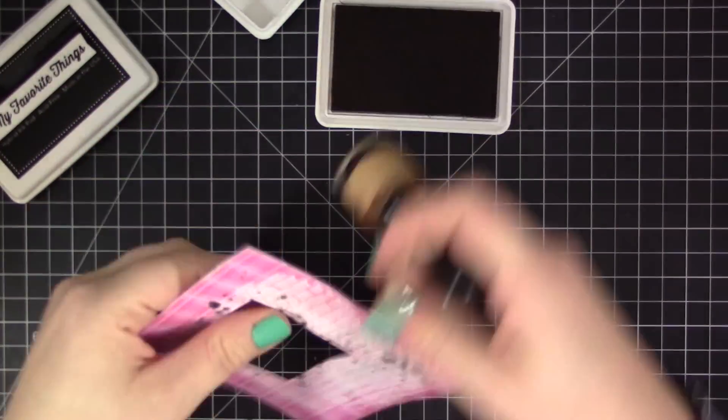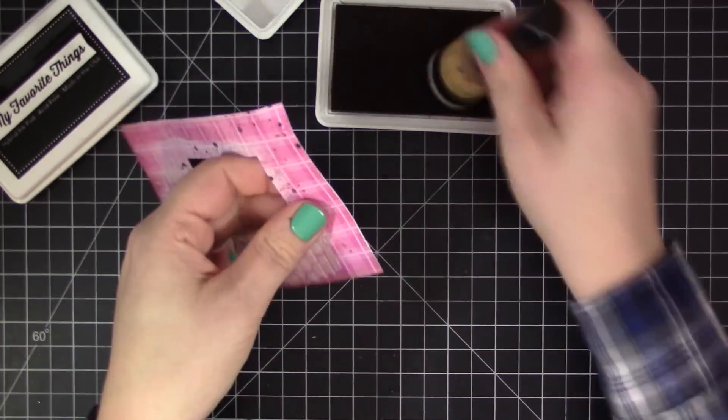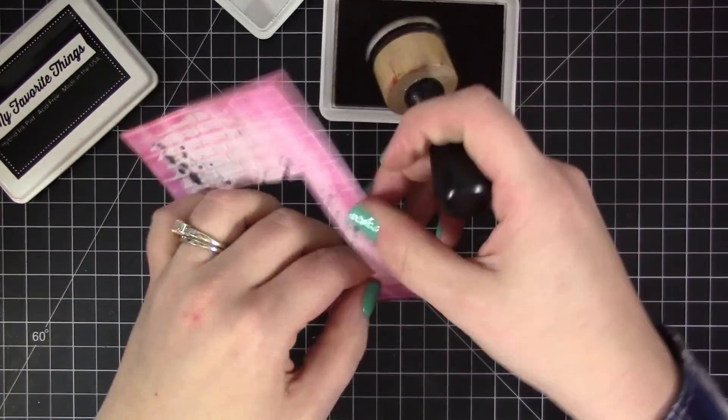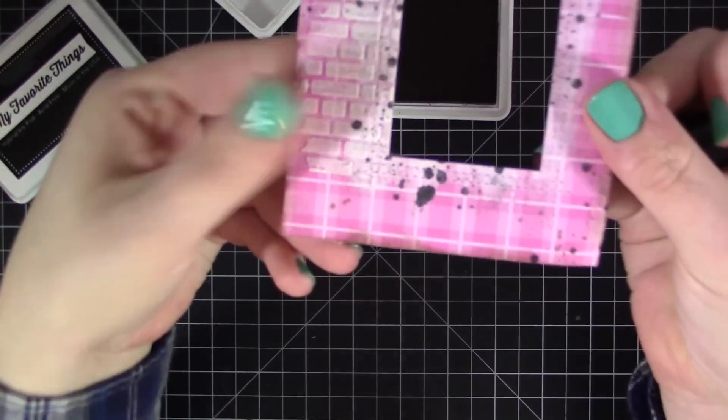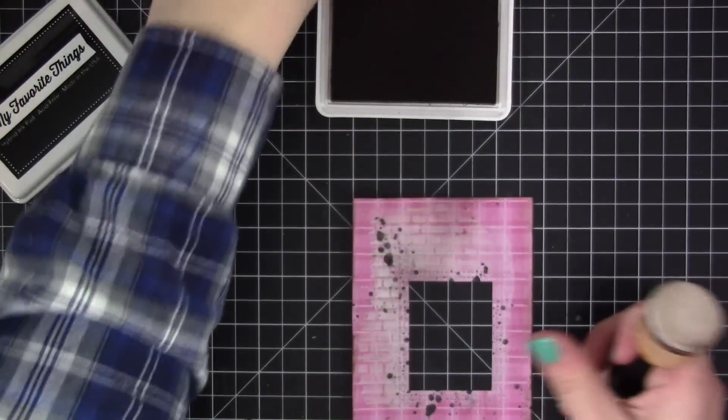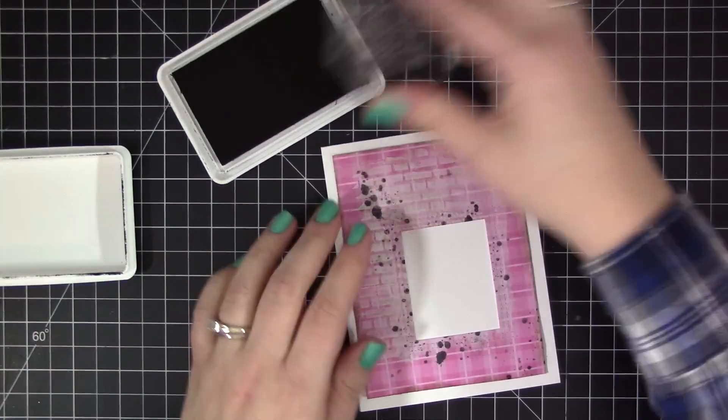Then to finish off this little pattern piece, I'm going to take the same craft ink that I used for the stamping on the background, and I'm going to use an ink blending tool to just add some of that ink to the edges to distress it and make it look a little bit worn.